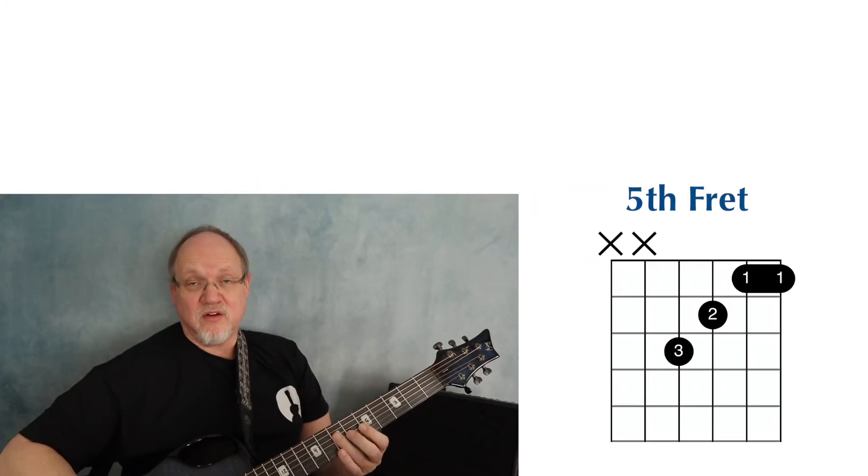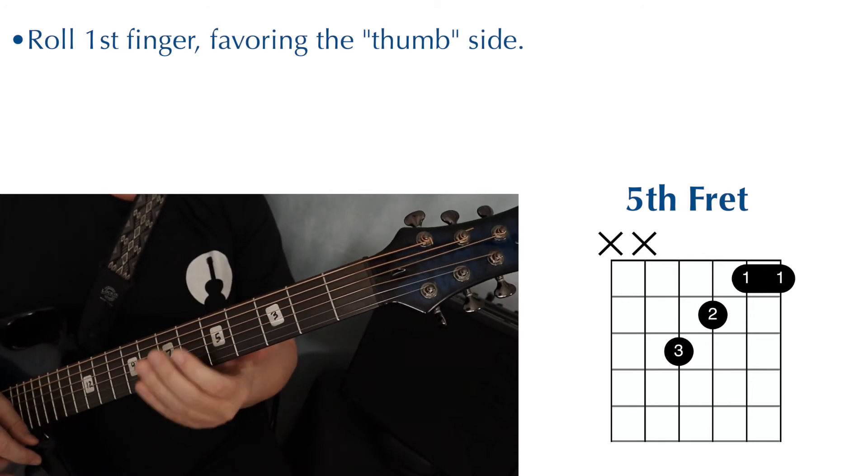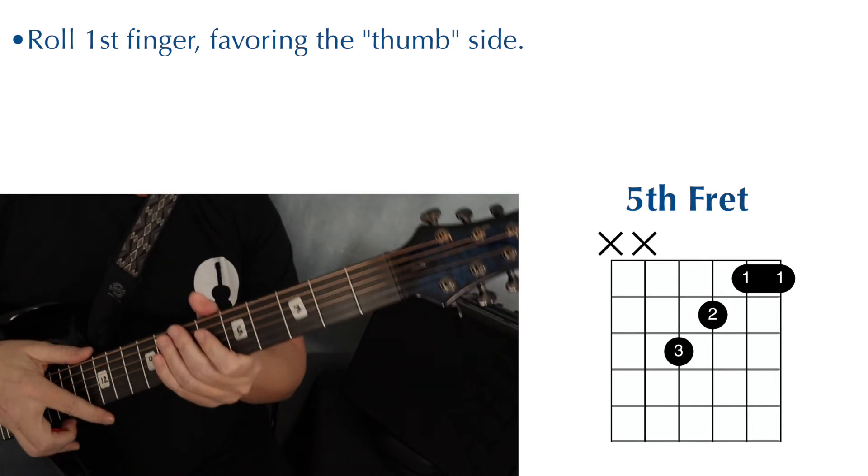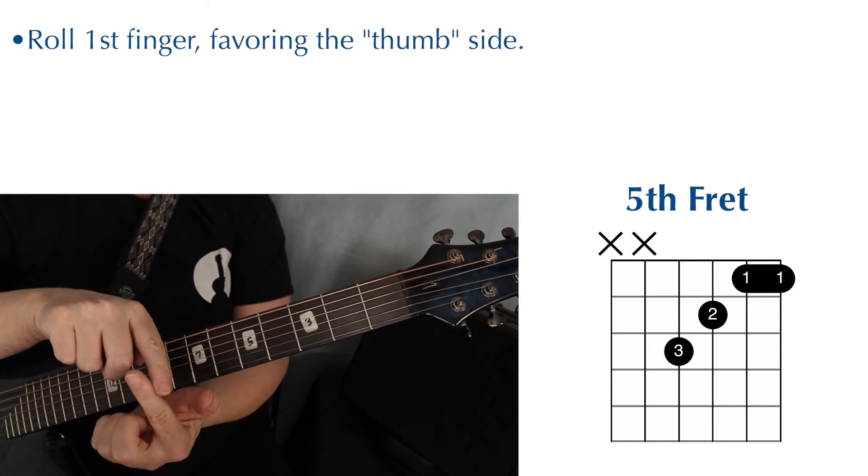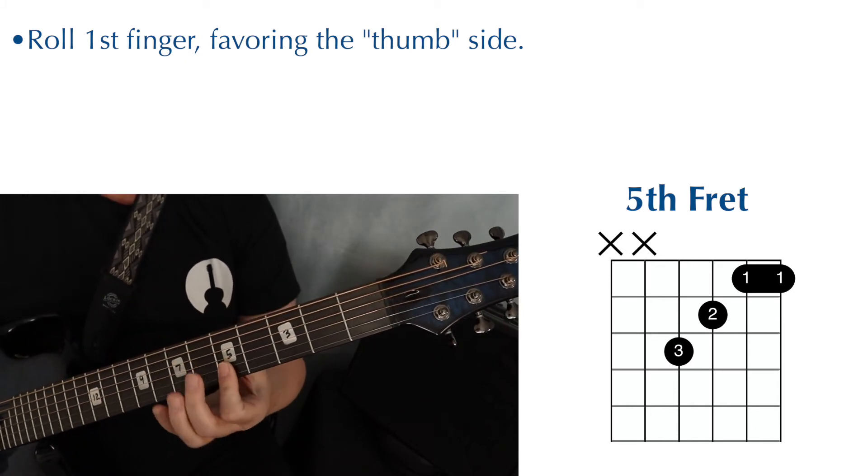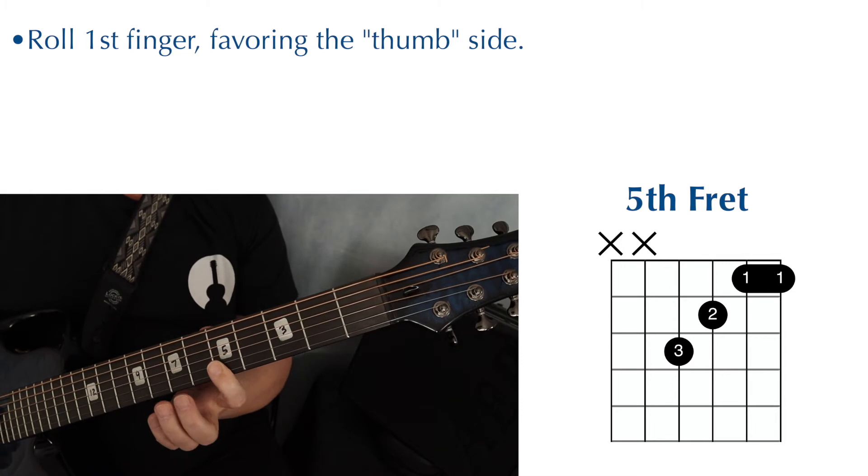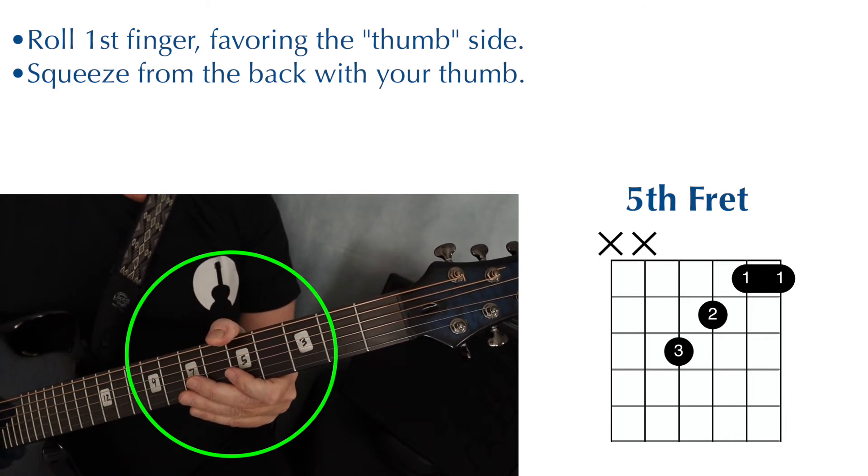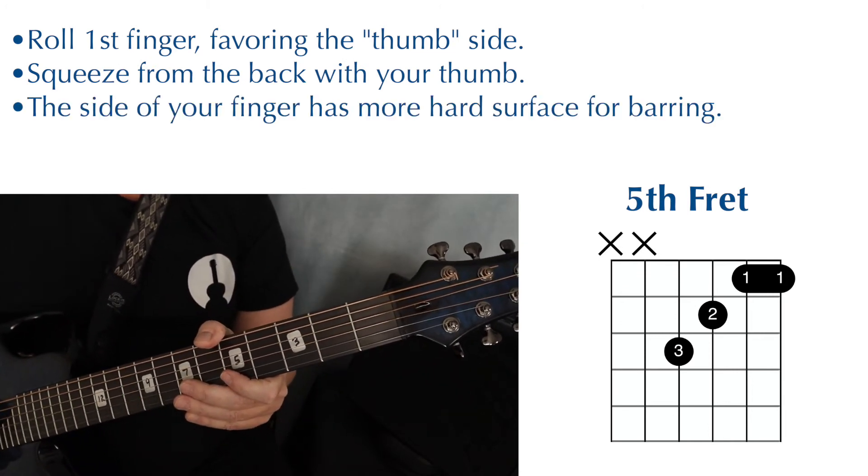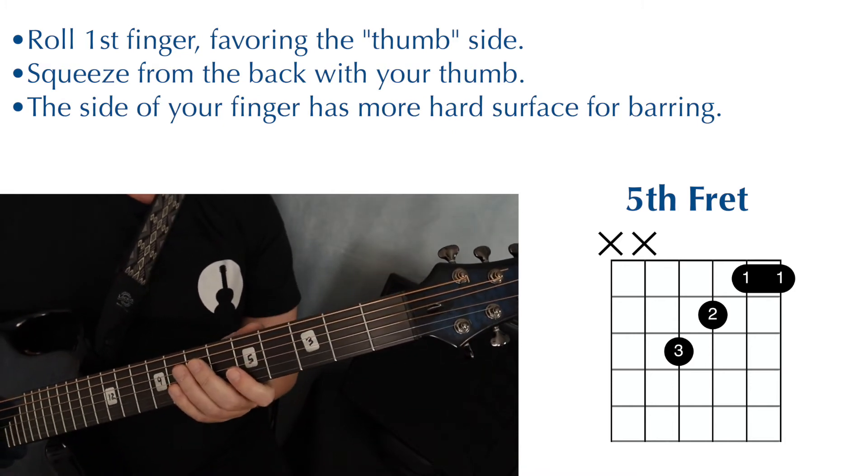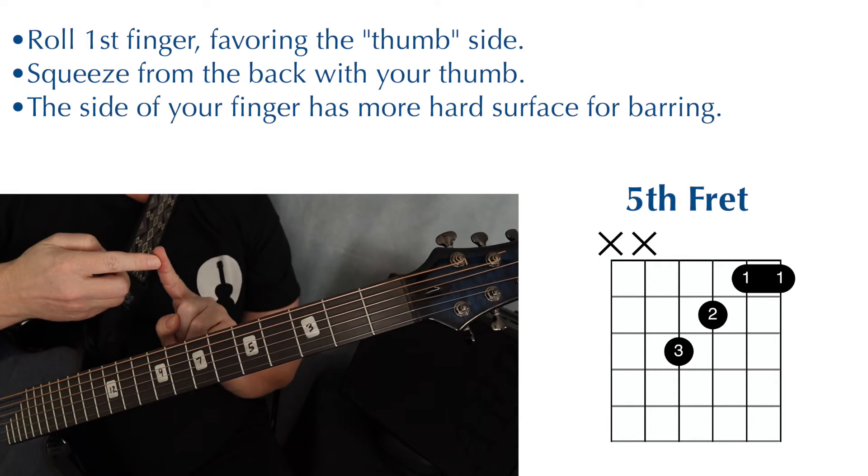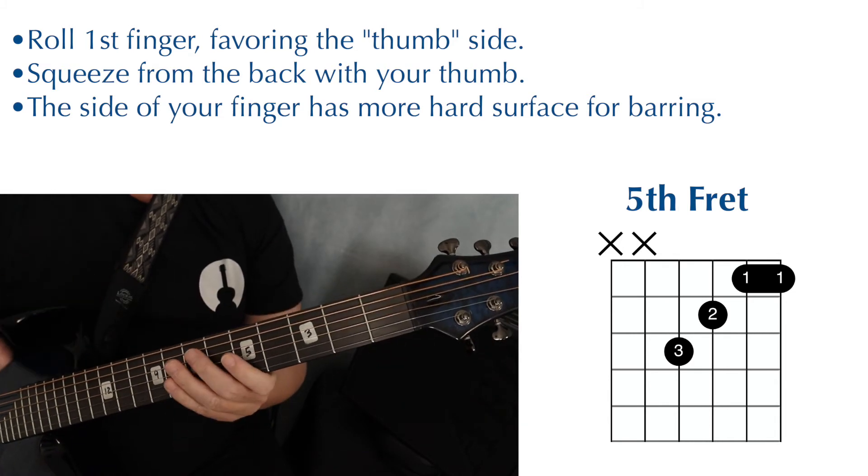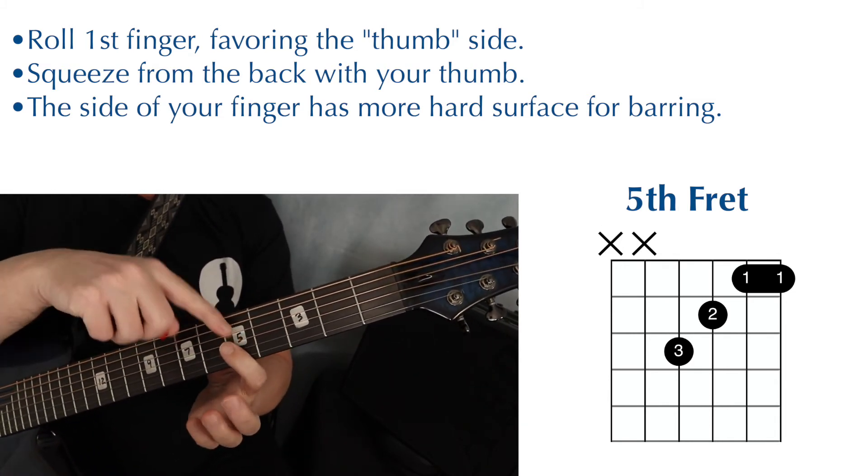Now let's talk about the angle of your first finger, the one that's doing the barring. Instead of playing on the very front of your finger, you might find it helpful to roll it a bit. So you're playing on this side of your finger, the side that's closest to your thumb. I'll exaggerate here. So this is the front of your finger. This is more on the side of my finger. And don't forget, you should also be pushing from the back of the neck with your thumb. The reason you might want to favor the side of your finger is that the front of your finger is a little squishier. And if you roll your finger more toward the side, you're going to hit more bone and you'll be barring those two strings with a harder surface.